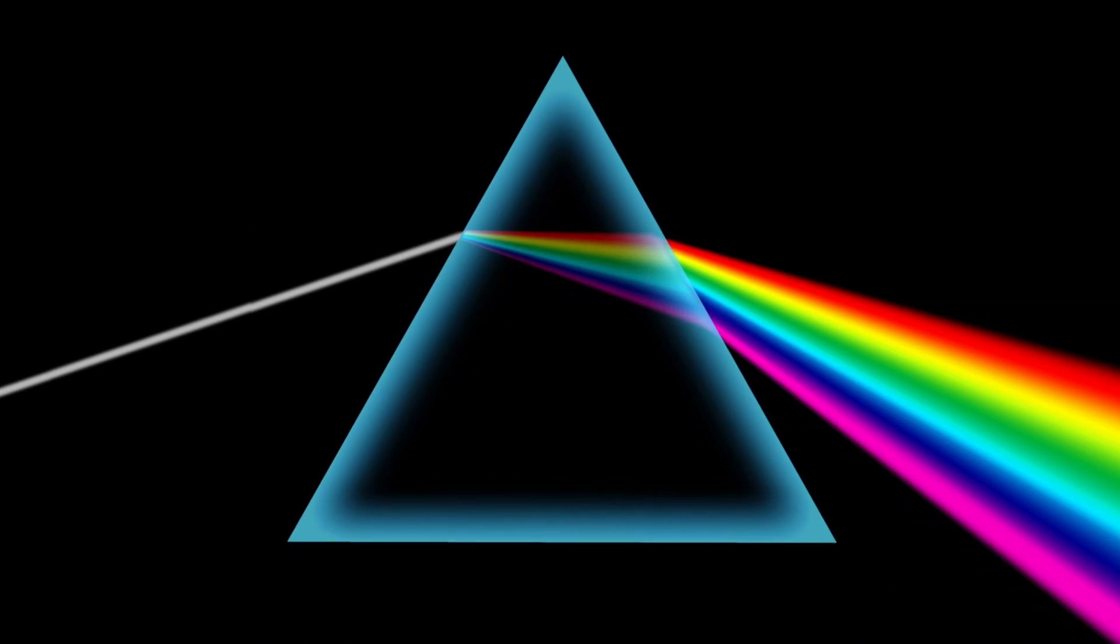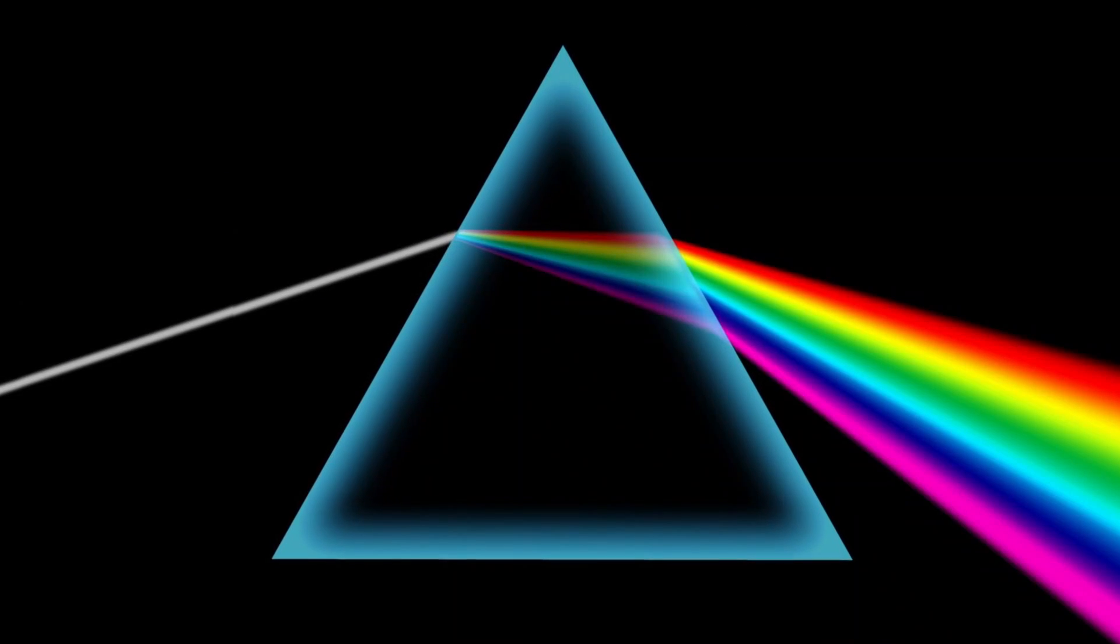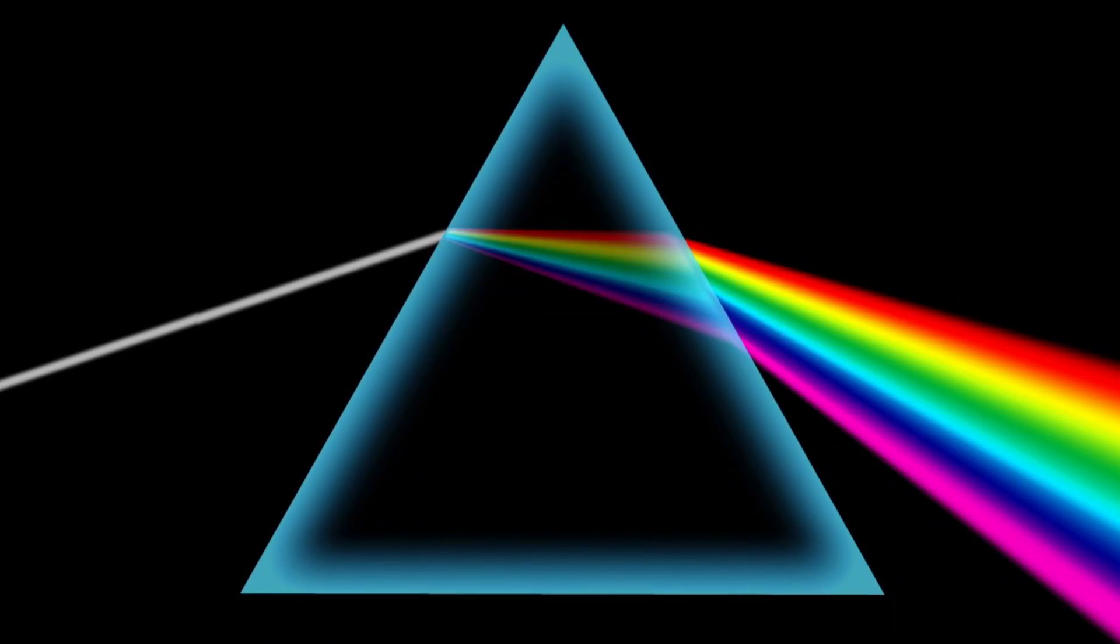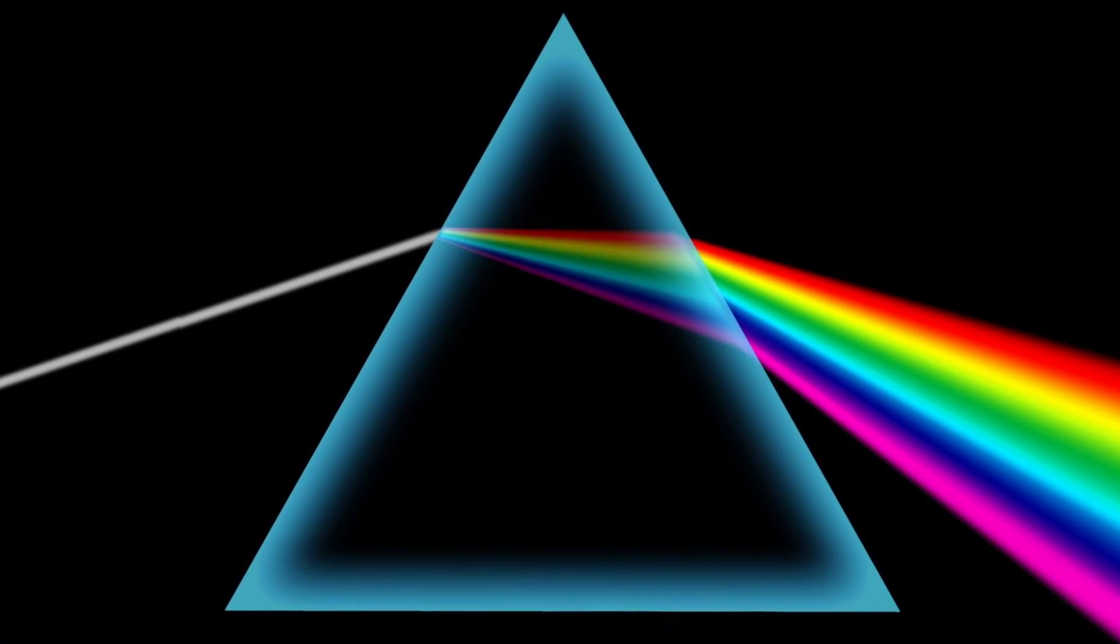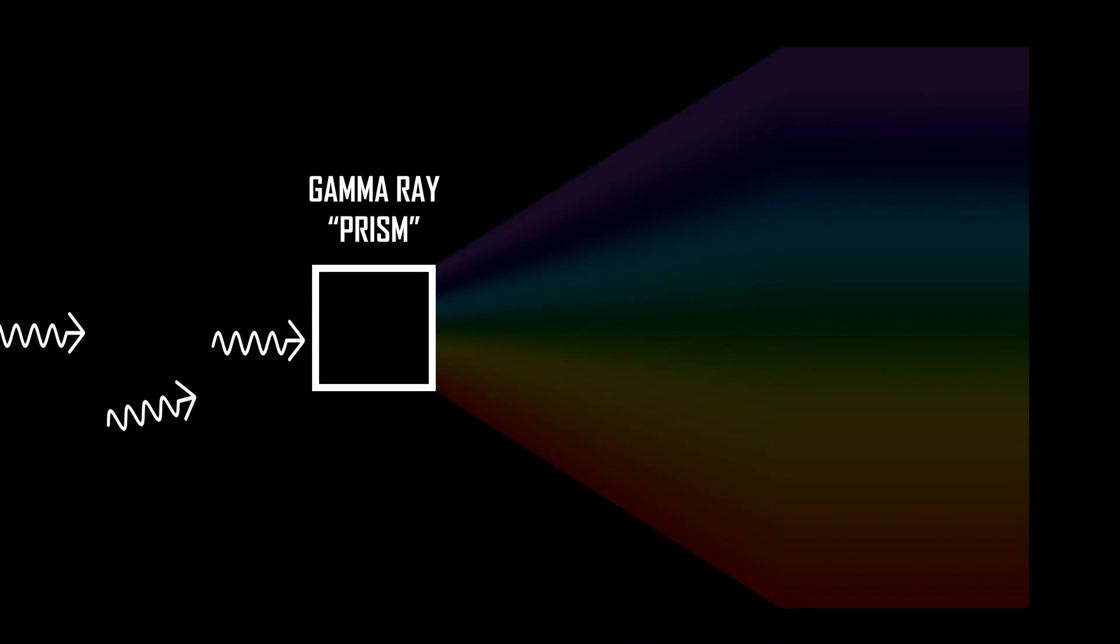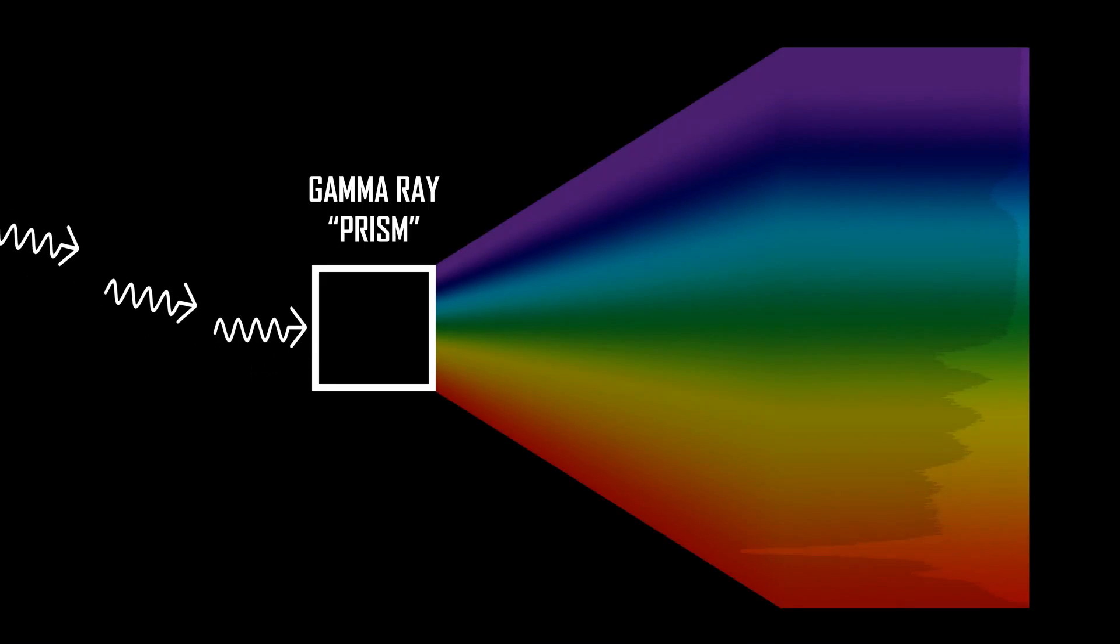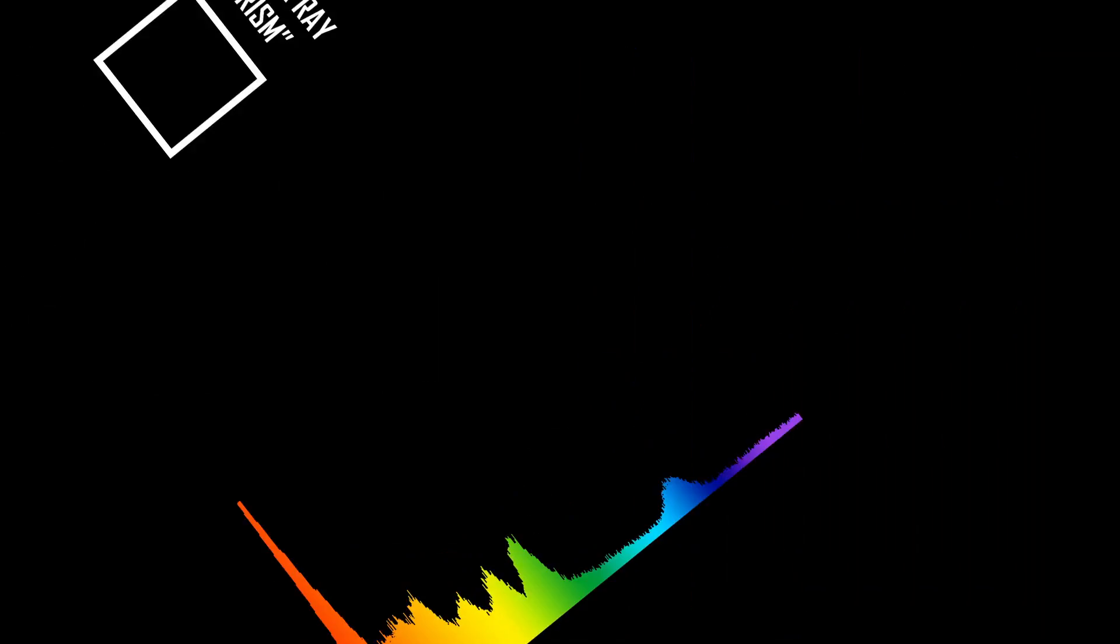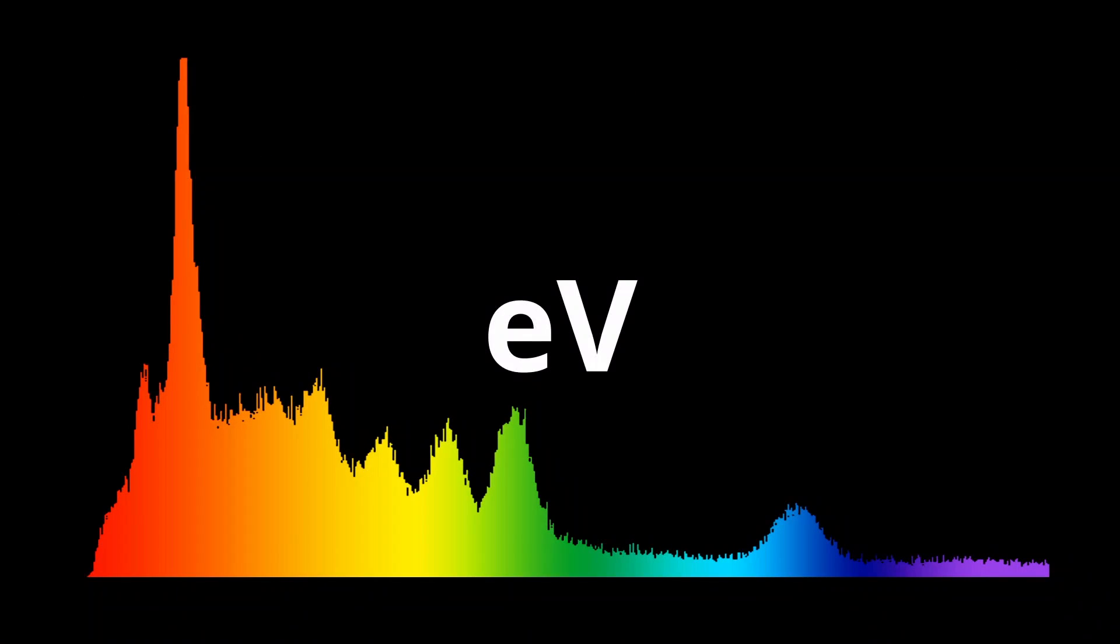Perhaps the simplest way to understand what a gamma-ray spectrometer does is to think of how a prism works to separate rays of white light into their component colors. Gamma rays are just photons, like visible light. So a gamma-ray spectrometer allows us to separate these extreme rays into their frequencies, just like colors, but conventionally referred to as their energy levels and are measured in electron volts.